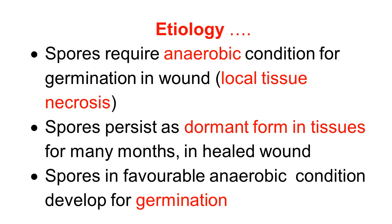Spores require anaerobic conditions for germination and conversion into the vegetative form. Local tissue necrosis is a favorable condition for germination of the spore. Importantly, spores persist as a dormant form in tissues for many months, and even in healed wounds. Whenever there is opportunity, the spore converts into the vegetative form and produces the disease. In favorable anaerobic conditions, spores develop into the vegetative form and cause disease.